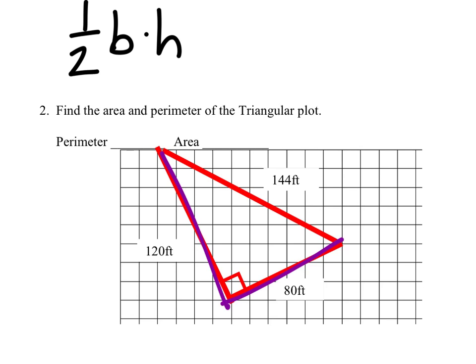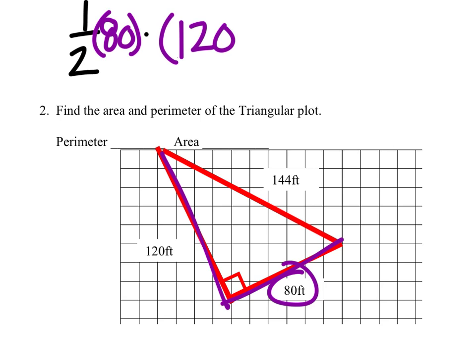So for example, we can say the base is that 80 foot length right here. And then we can say the height is that 120 foot length along the side there. That 144 is not even important for you guys. It's just meant to confuse you.